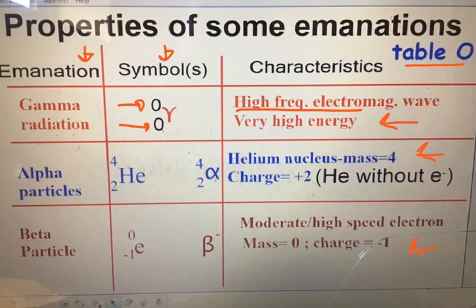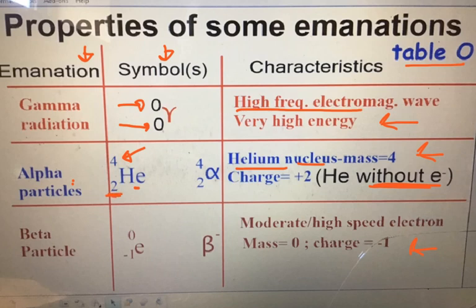Alpha particles, on the other hand, have a mass of four — they're the bulkiest on Table O in terms of mass. They have two protons and they resemble helium. Alpha particles are basically the helium atom but without electrons. Helium has two protons and, to make it neutral, two electrons. So if you take away those two electrons, alpha particles have a positive charge — positive two, to be exact.